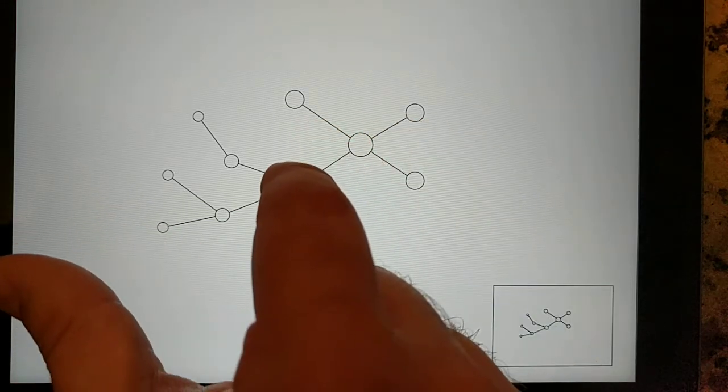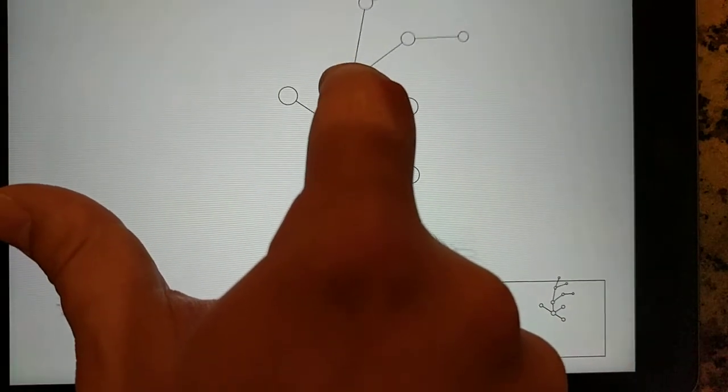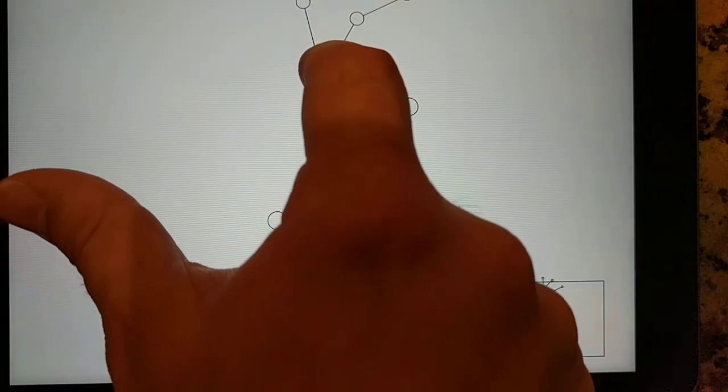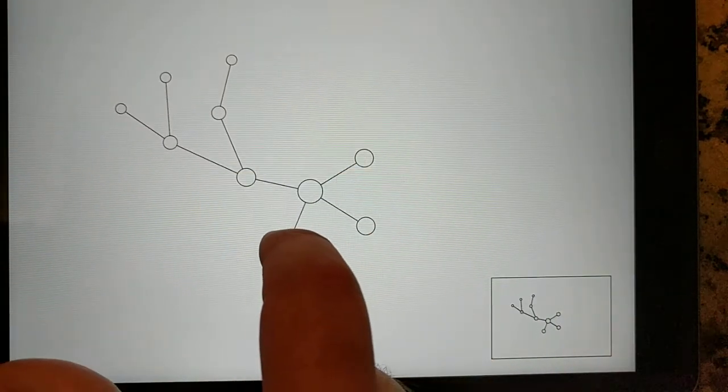We can rotate entire sections of the tree by moving the root, and that rotates it about the common parent. That lets us maintain the structure of the tree more accurately.